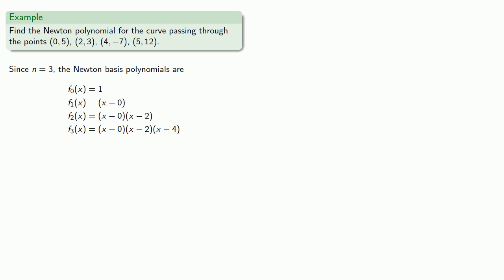And again, we can go through each of our points in sequence. Since the graph passes through (0, 5), then if x is equal to 0, then y is equal to 5. And again, since each of these last three polynomials has a factor of x, then when x is equal to 0, they'll vanish. And the only thing we'll have left is a0.